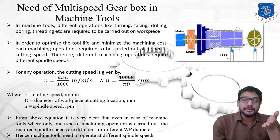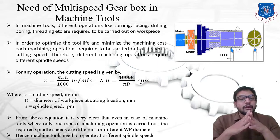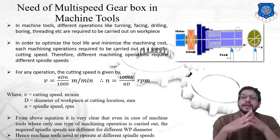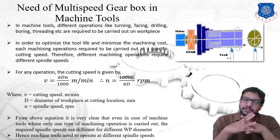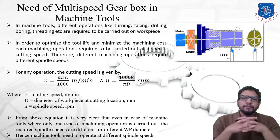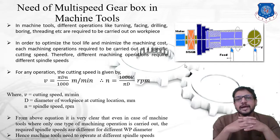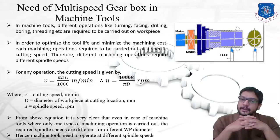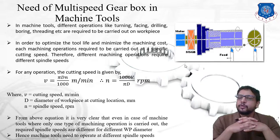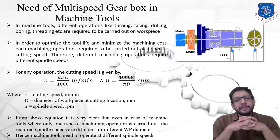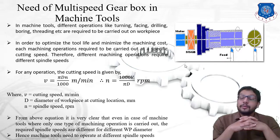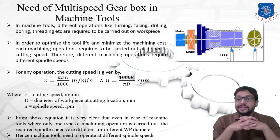In today's session we discussed the aim of speed and speed regulation and the need for a multi-speed gearbox in machine tools. In our next session we will start with progression laws — arithmetic progression law, geometric progression law, harmonic progression, and logarithmic progression. Stay tuned, and thank you all.